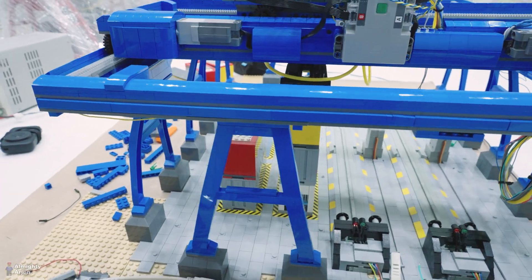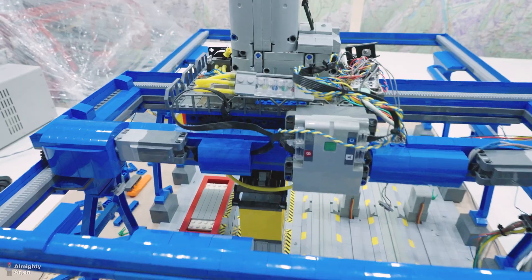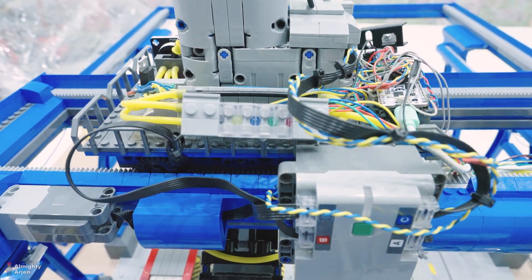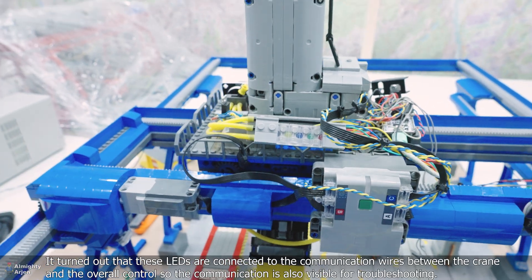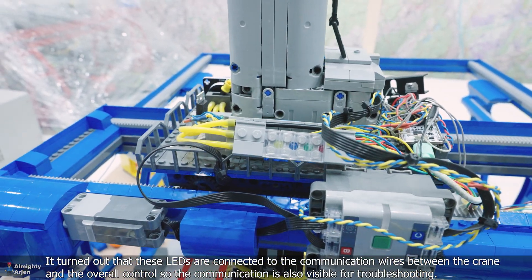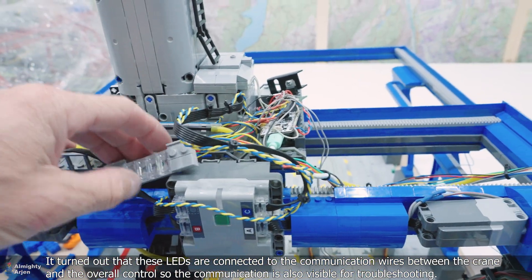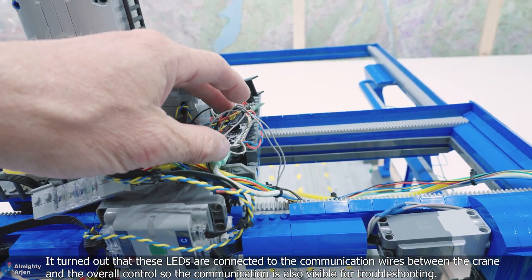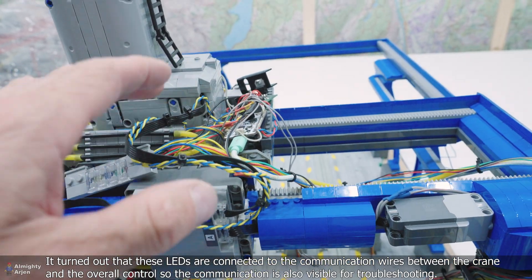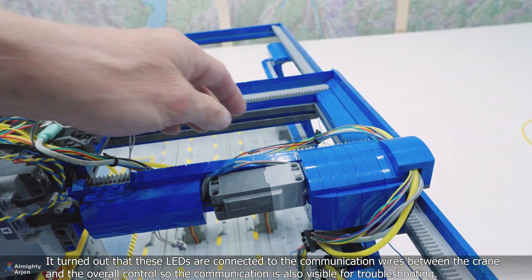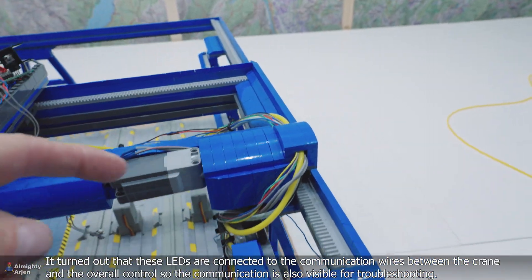I'm still wondering what these LEDs are that I installed more than a year ago. It has to do with communication somehow, so I'm following the wires to see where it all ends. It's going to the controller of the blue crane, which is this small unit here, and the signals also split and go by this wire beam all the way down.